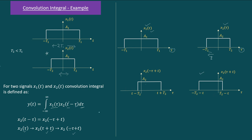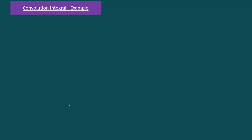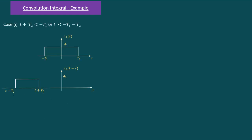Our goal is to evaluate y(t), which exists from minus infinity to plus infinity. Since y(t) can be any signal over that range, t must vary from minus infinity to plus infinity. As a first case, let us assume that t started at minus infinity and our rectangular signal started moving in the positive direction.